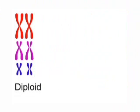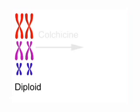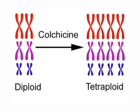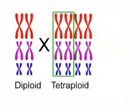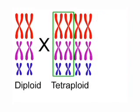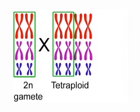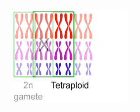To move in the other direction, up the ploidy scale, breeders have two techniques. First, plants can be treated with a compound called colchicine, which doubles the number of chromosomes. Alternately, a few pollen grains from diploid plants may naturally have twice the number of chromosomes. This 2N gamete is compatible with tetraploid plants, allowing them to be crossed.